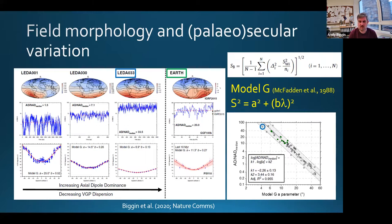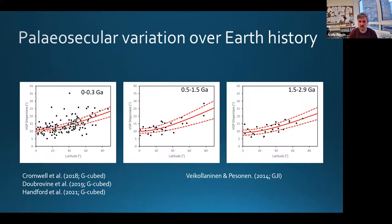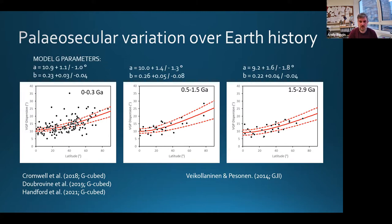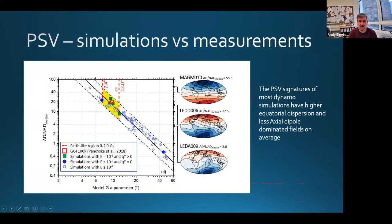When we put together a lot of dynamo models and also included some various models from earth, including GGF100K, these green dots here, what we found was rather a nice power law. So that model G A parameter could be used to predict this axial dipole dominance. And this struck us as very important because this model G is something that we can get a billion years ago, whereas, you know, the shape of the magnetic field is not so easy to estimate before recent times.